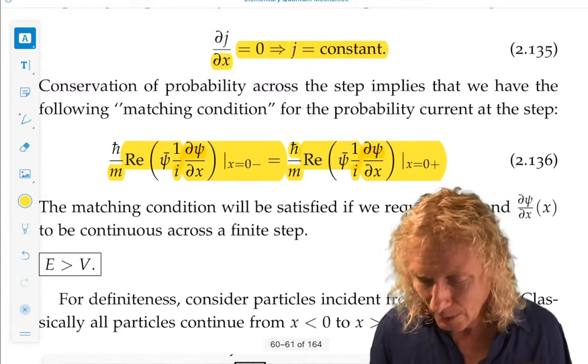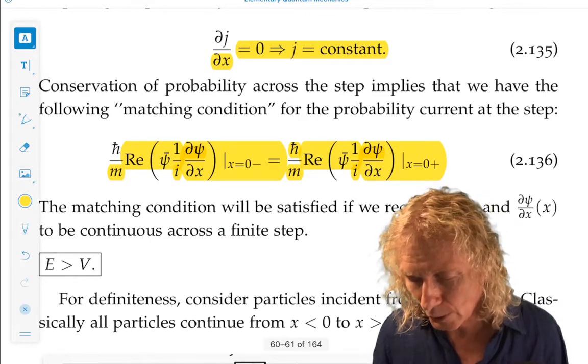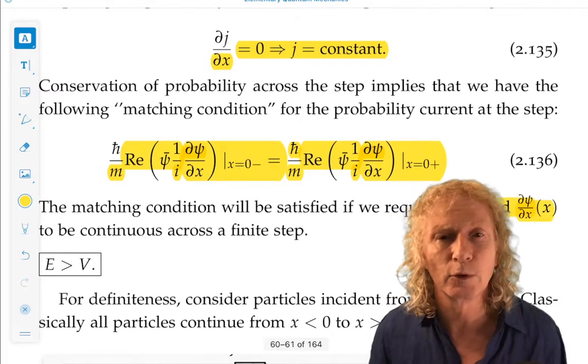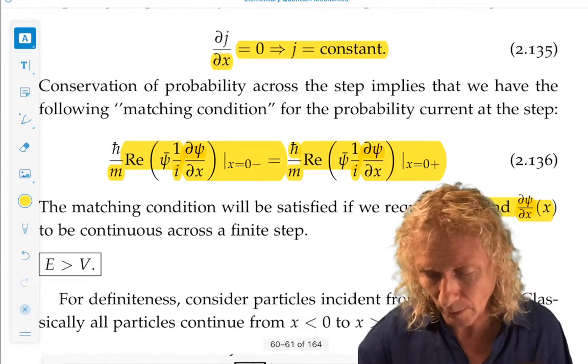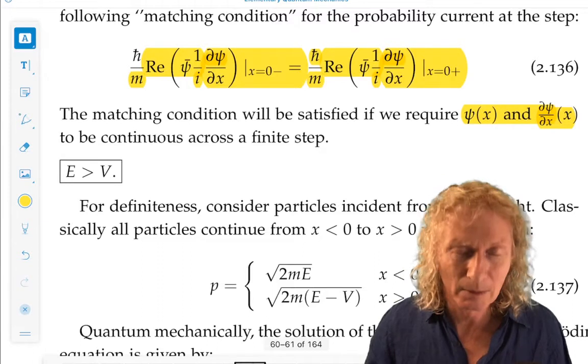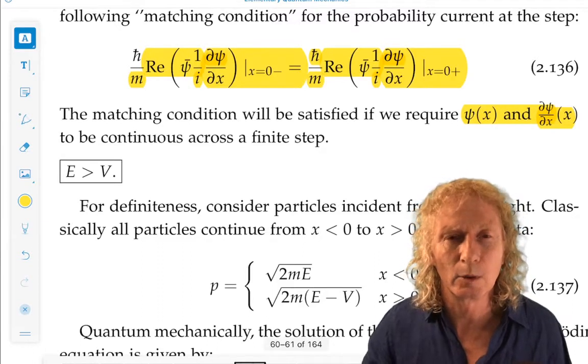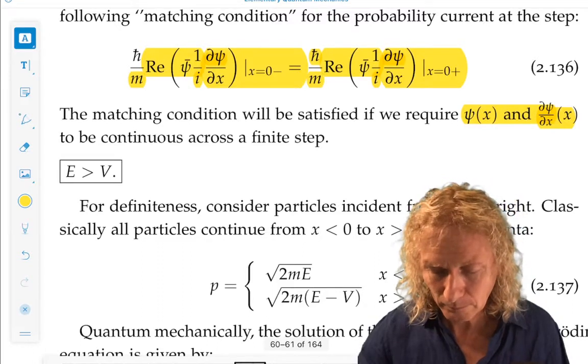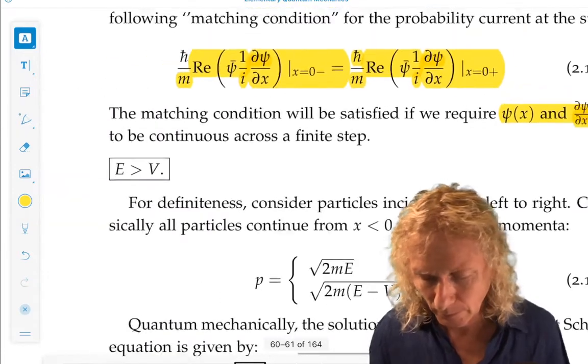Obviously true. So this requires the wave function and its first partial derivative or just its derivative, it depends on one variable, to be continuous across the finite step. And we said at the very beginning we were going to demand this of our wave functions.